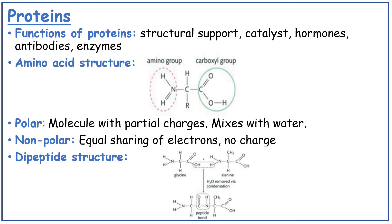Proteins. Functions of proteins are structural support, as a catalyst, hormones, antibodies and enzymes. Amino acid structure: you've got the amino group which is NH2, a central carbon, and the carboxyl group. Note: there should be a single bond between the N and the H. Polar means a molecule with partial charges that mixes with water. Nonpolar means equal sharing of electrons with no charge. The dipeptide structure is when two amino acids join together via a condensation reaction. H2O is taken away and a bond forms between the C and the N — this is known as a peptide bond.